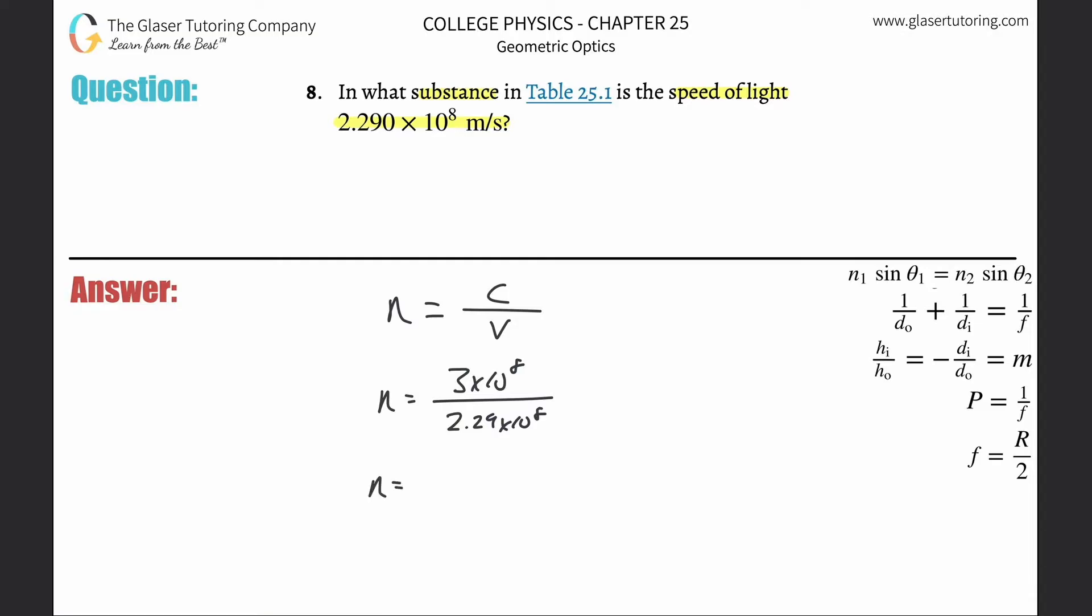What we do is we literally just plug it into the calculator. So three times 10 to the 8, and the 8 will cancel. So you can just basically do three divided by 2.29. This works out to be about 1.31.